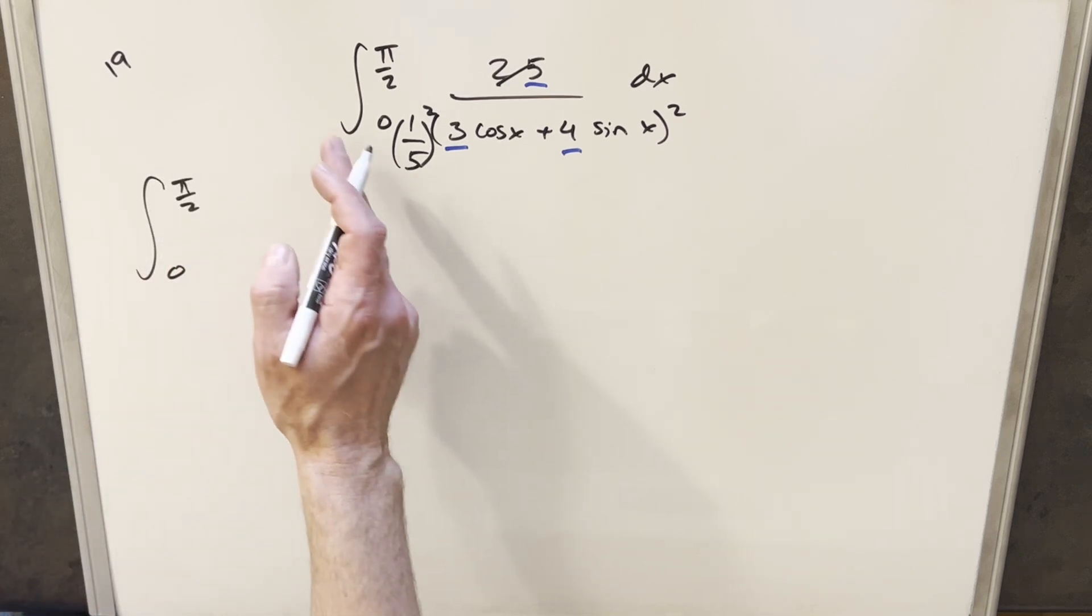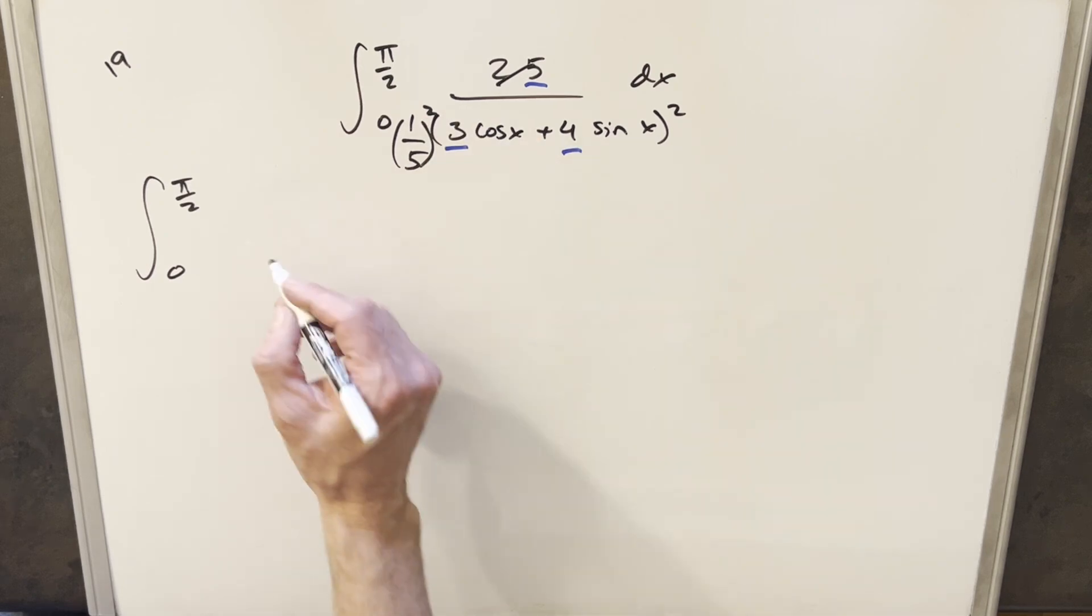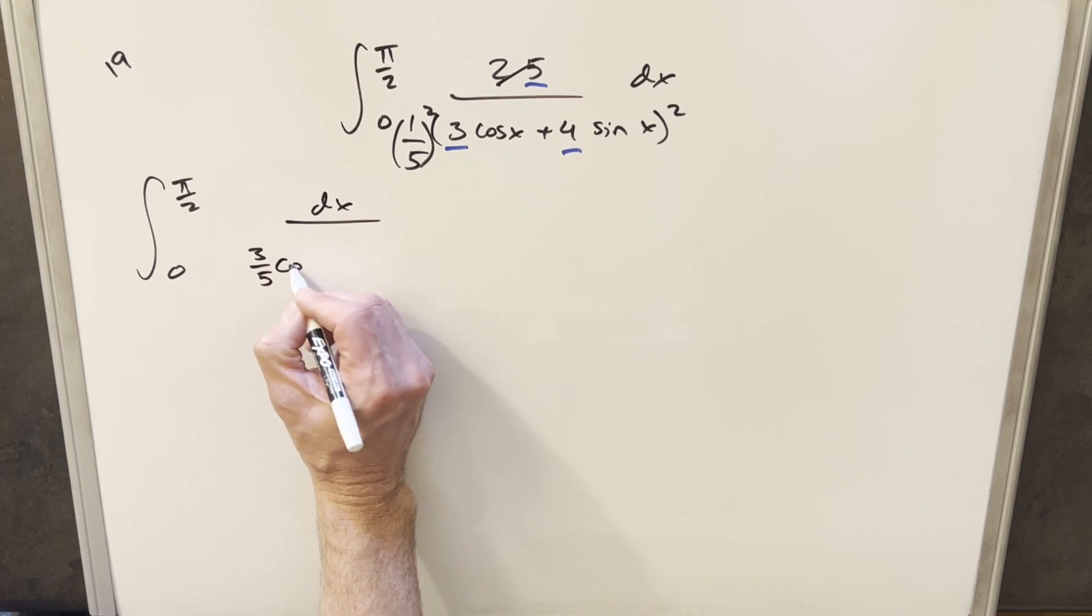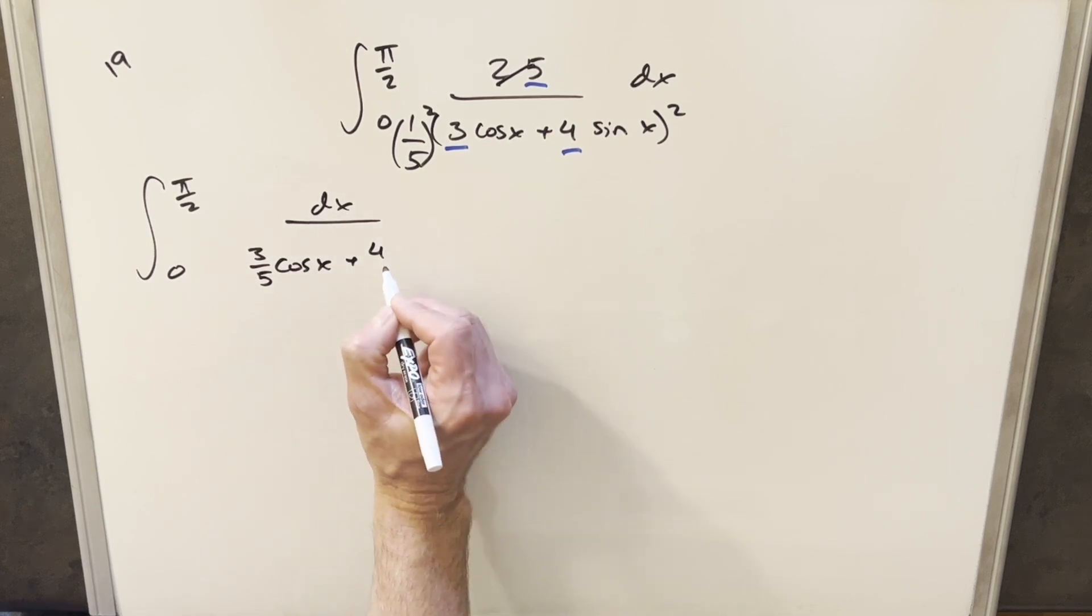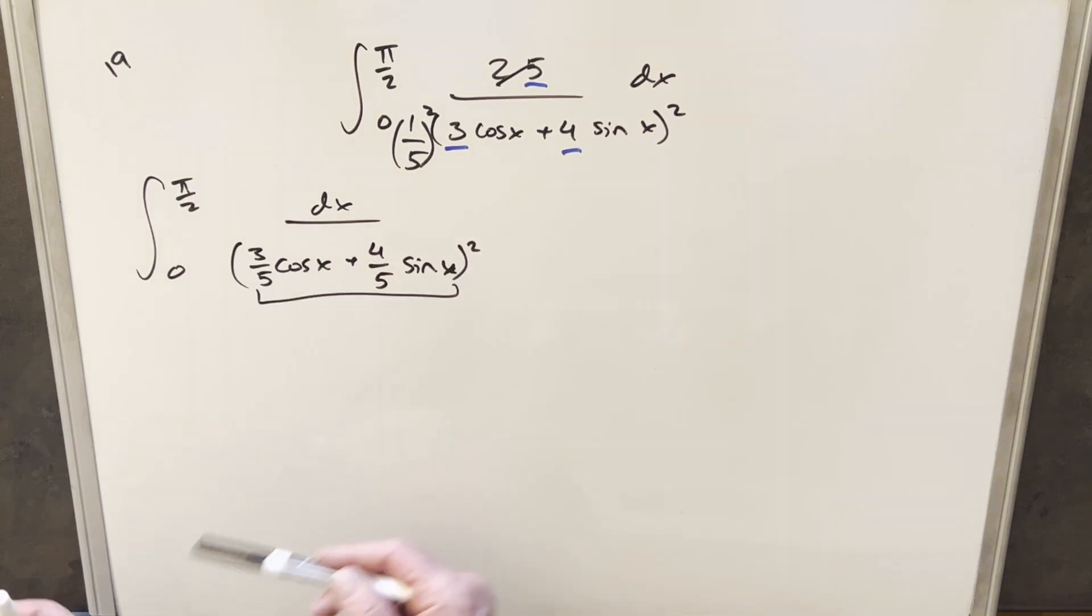Now I think it would work to just bring the 1 fifth up front, but I think what I'm going to do is multiply it inside this because both terms are squared. So squared. But what I want to notice here is just the similarity between this and the angle difference formula for cosine.